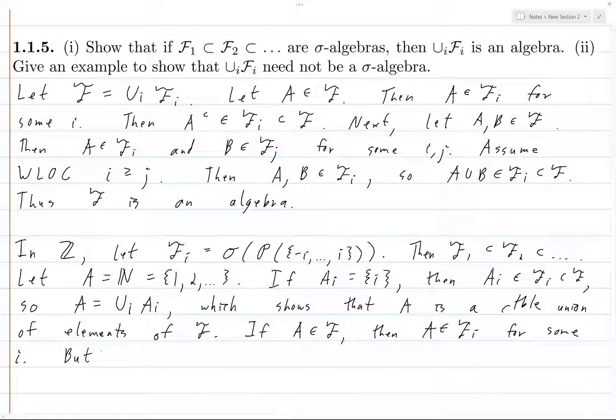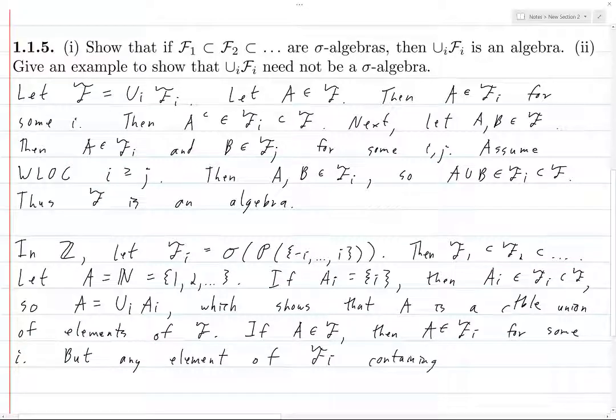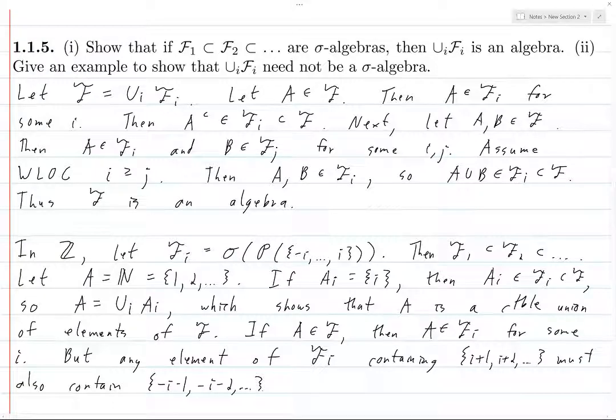now if A is in F, then A must be in Fi for some i. But, let's see here. So, what's the issue here? Any element of Fi, which contains i plus one, i plus two onwards, must also contain minus i minus 1, and then minus i minus 2, etc. For the reason that I talked about. Because you're generated by the power set of minus i to i. So, you've got to either include everything else outside of that set, or you can't include anything.